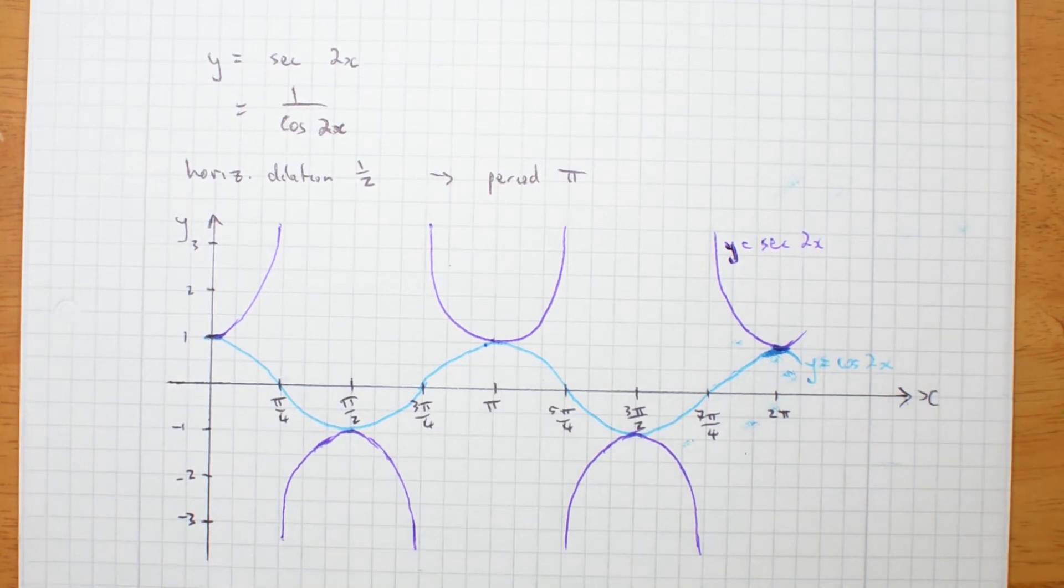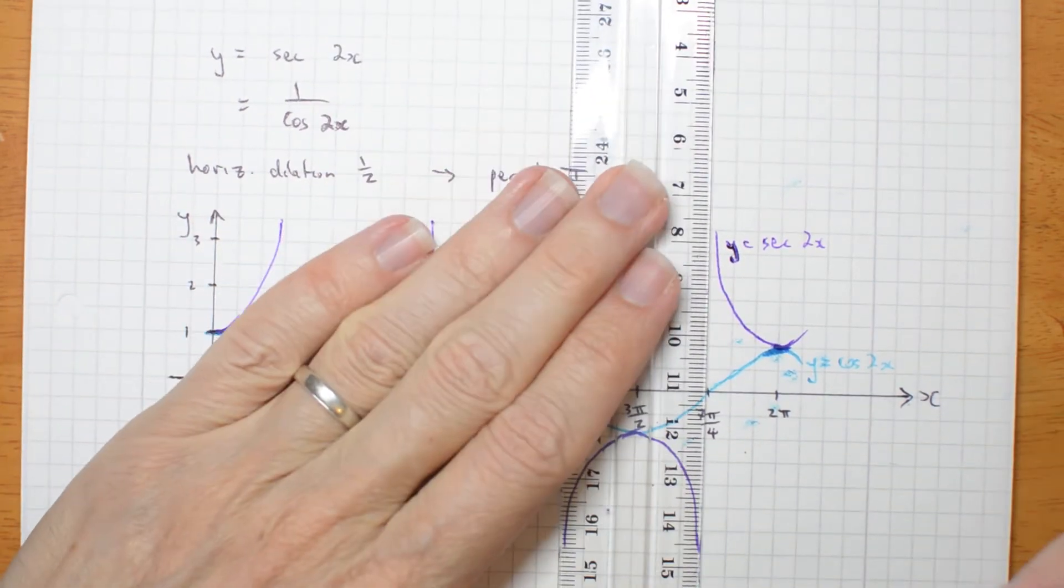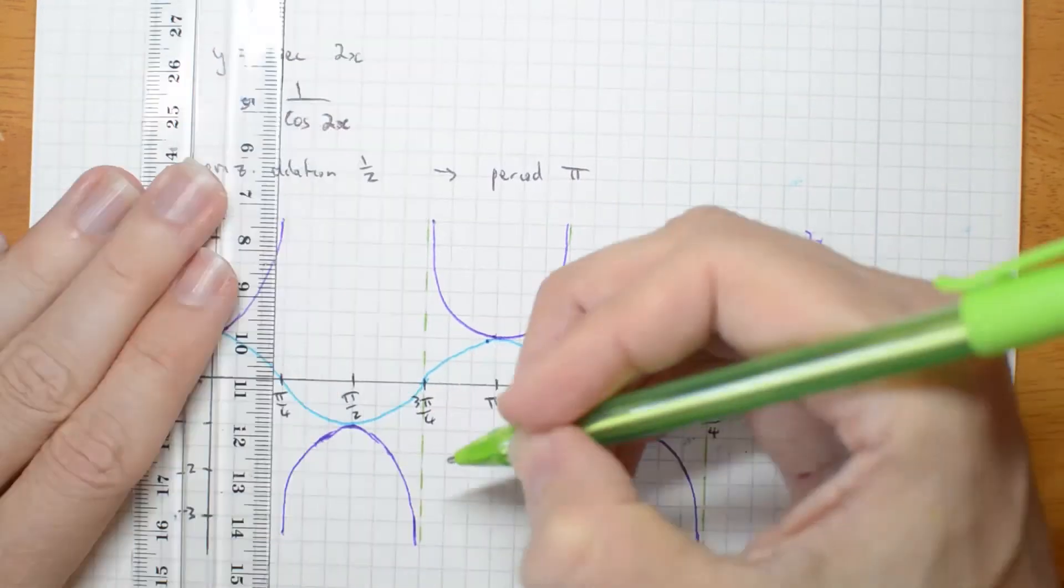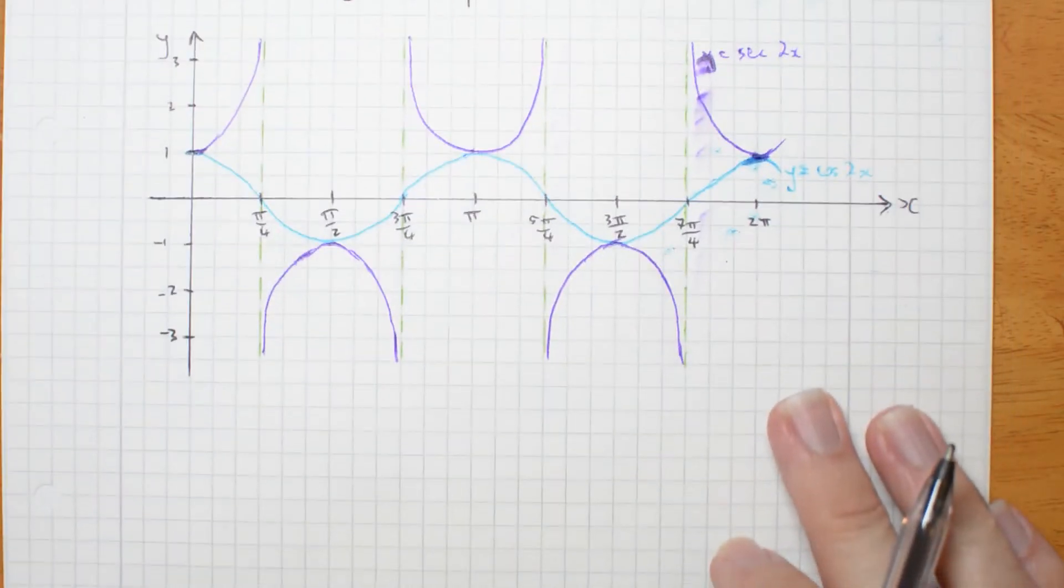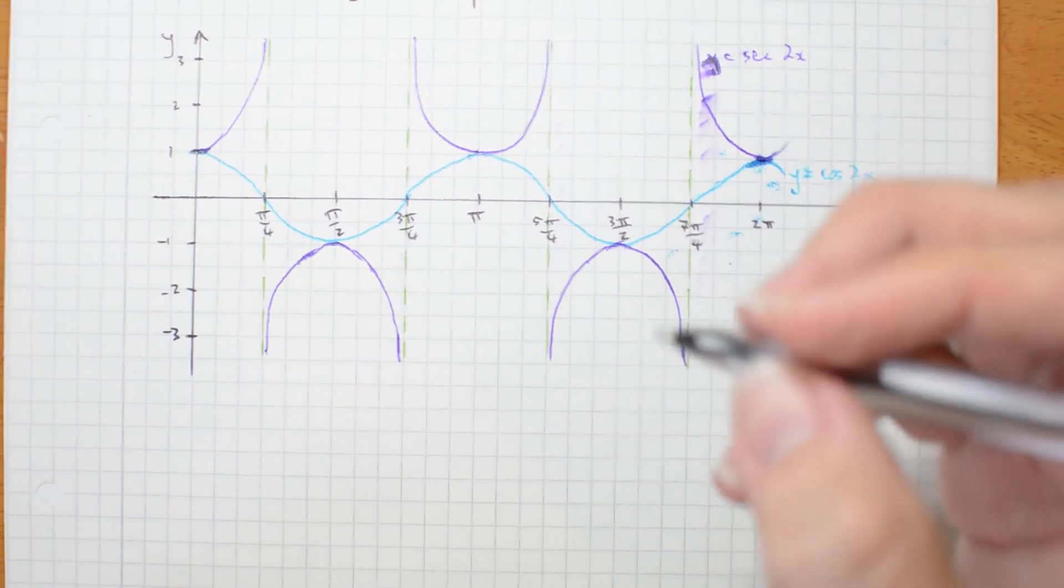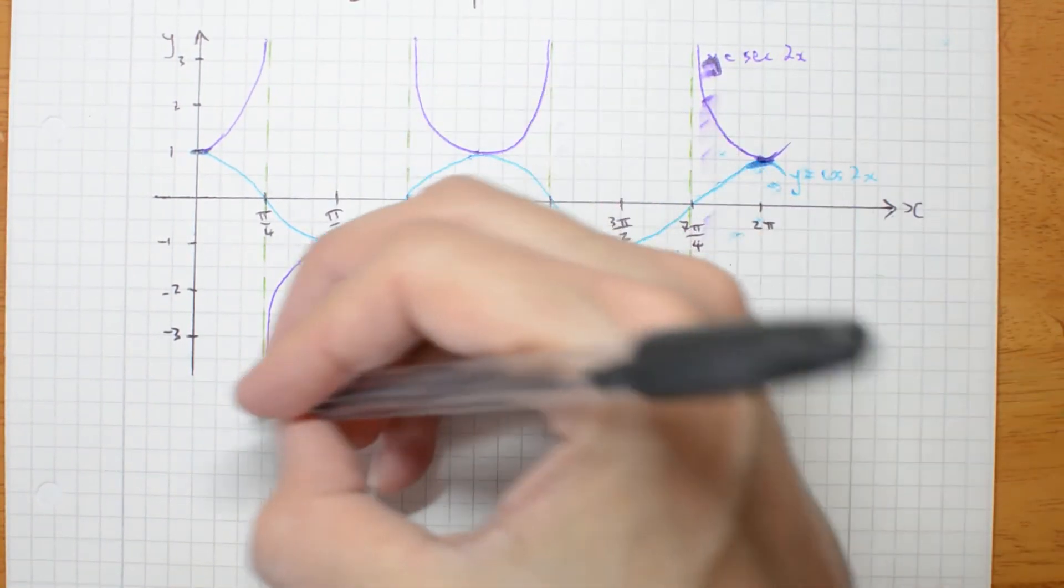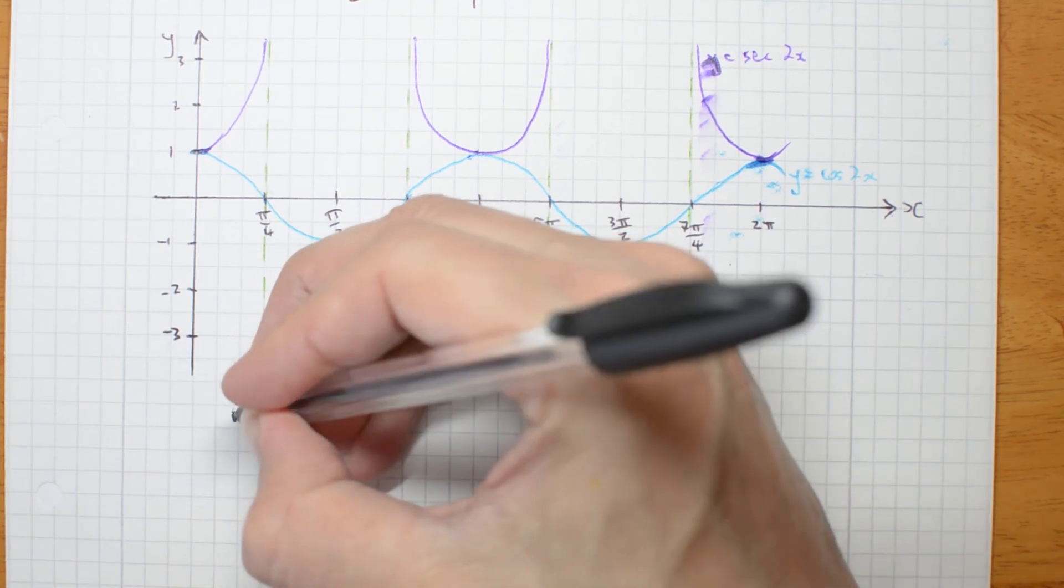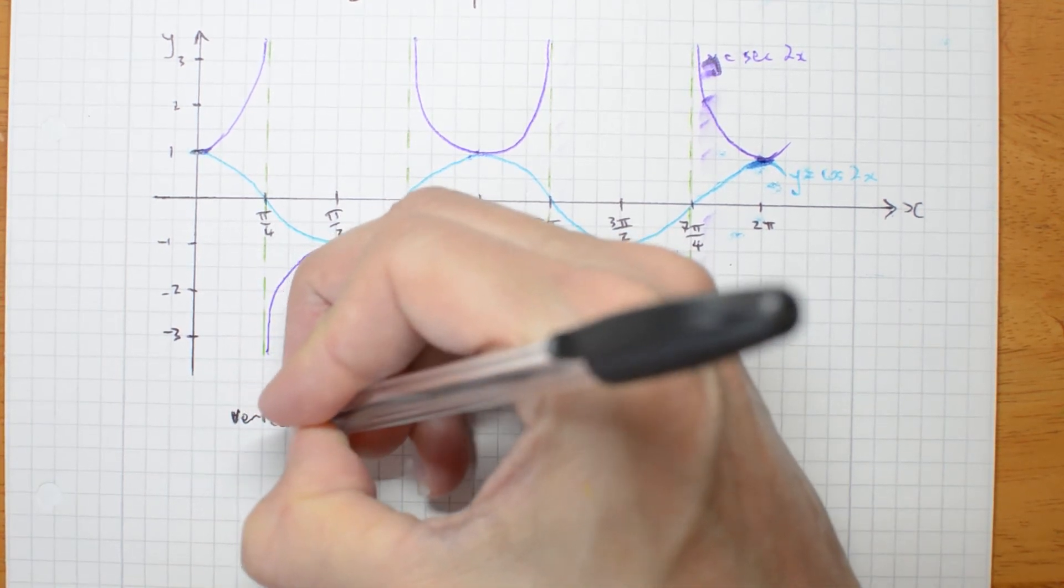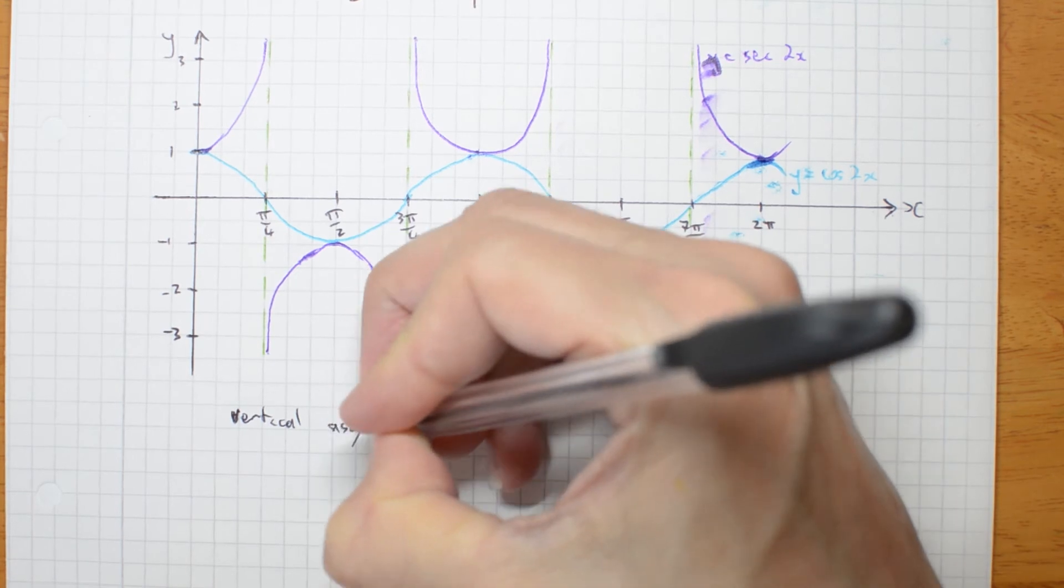I also should label those asymptotes. So I have, I should actually label them here properly, I also have vertical asymptotes.